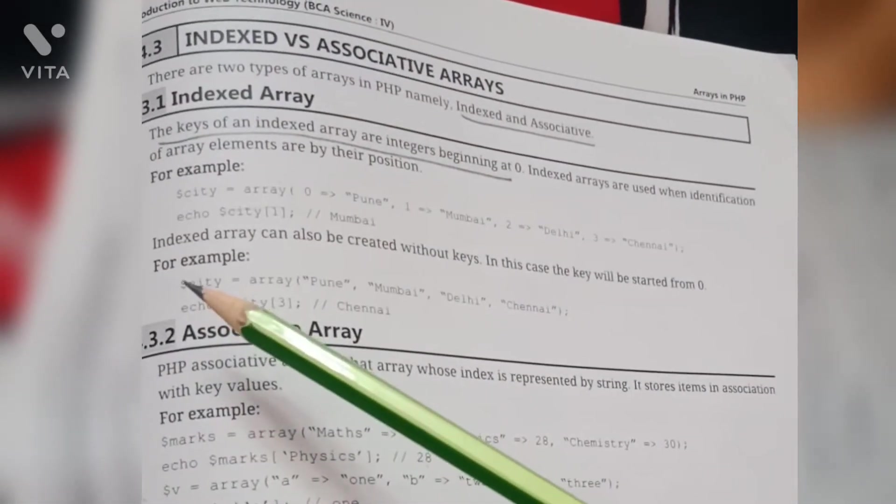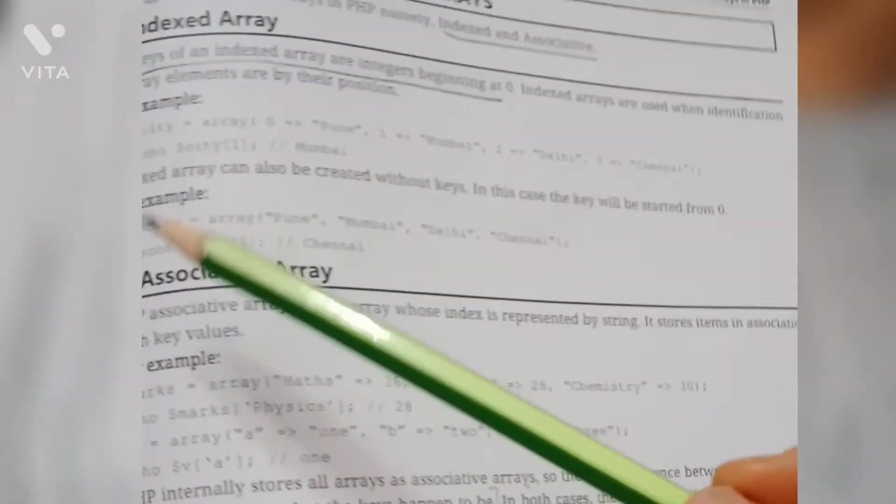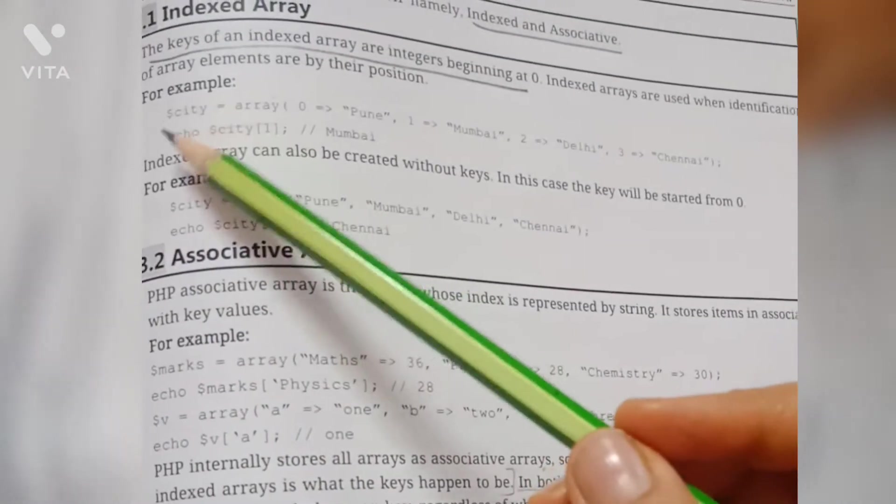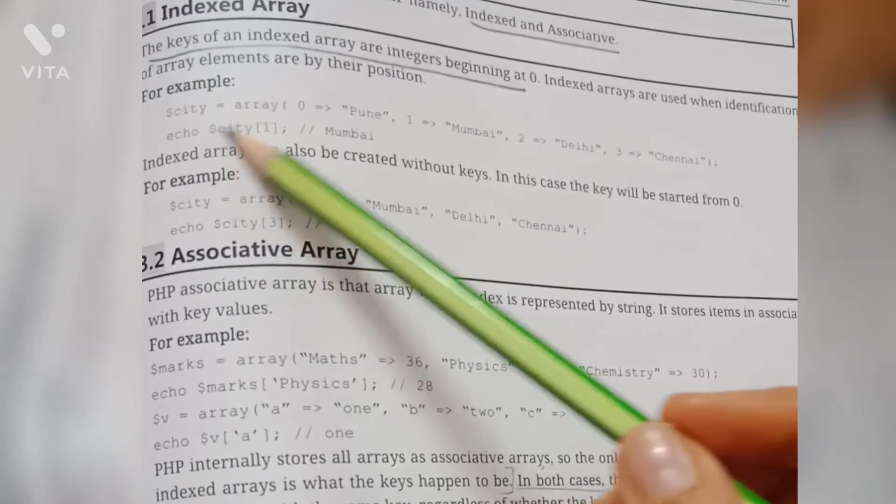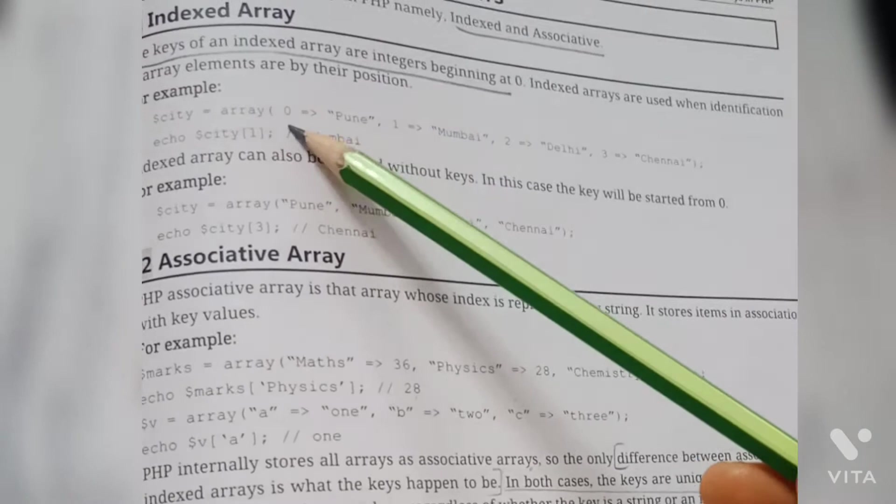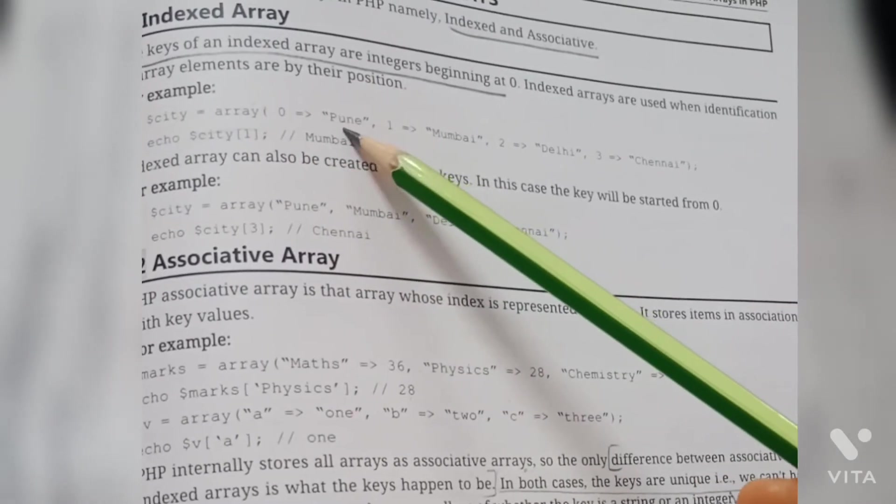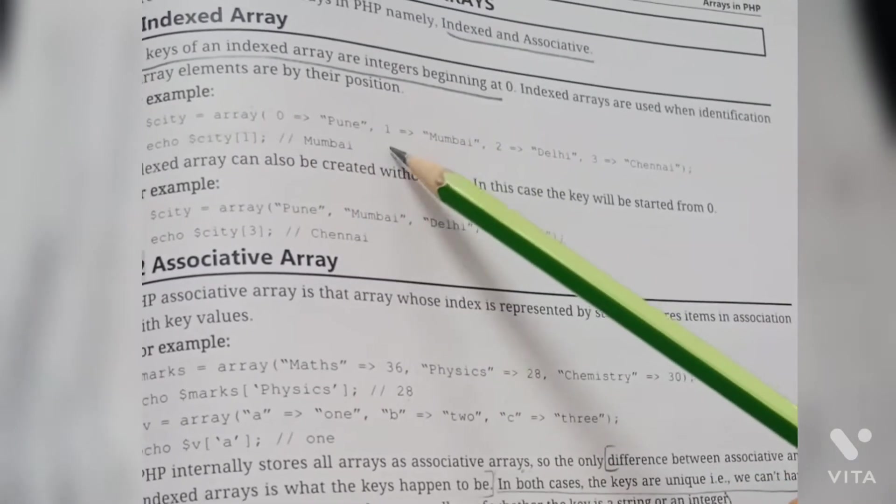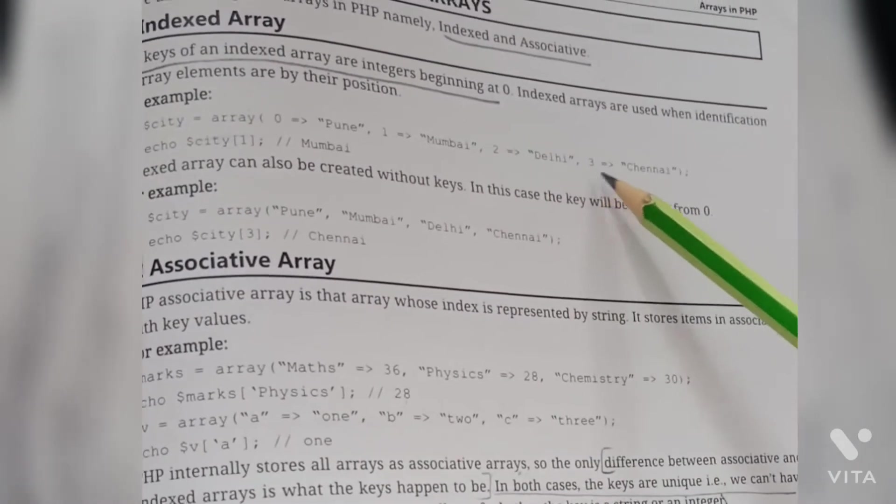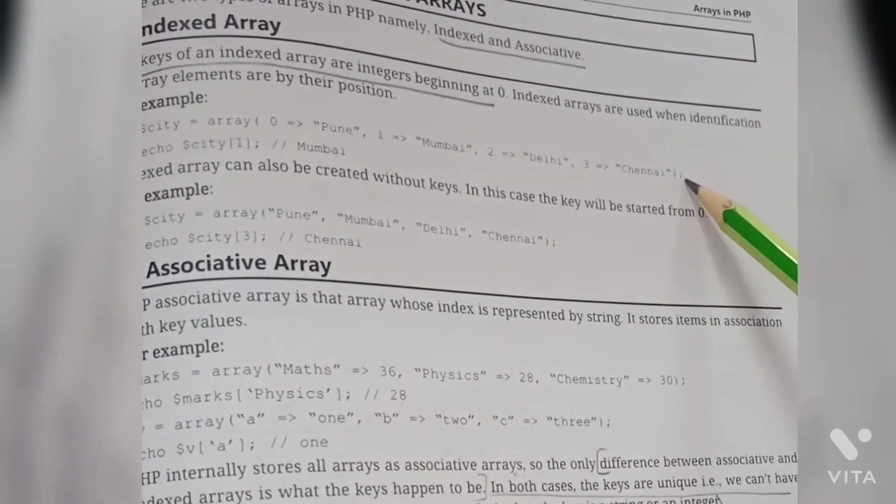Let's see the example of indexed array. Look at this example: dollar city equals to array keyword into round brackets, zero arrow Pune comma, one arrow Mumbai, two arrow Delhi, three arrow Chennai and semicolon.